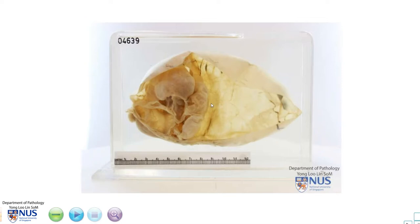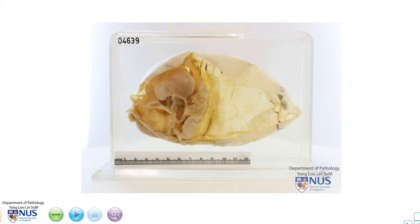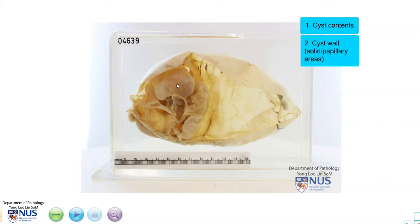Moving back to the cut surface, this is a multilocular cystic ovary. Multilocular means it's got multiple cyst compartments or locules, and when we are dealing with a cystic lesion, we need to look at the contents of the cyst as well as the cyst wall to see whether there are any solid areas or papillary areas.